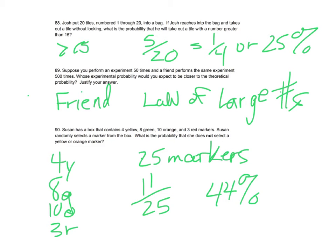Now, Susan, read this question carefully because it says, what is the probability that she does not select a yellow or an orange marker. So that means that there are 25 markers total. There are 11 that are not yellow or orange. So she's got a 44% chance of not choosing a yellow or an orange.